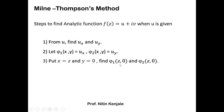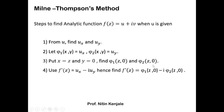After computing φ1(z, 0) and φ2(z, 0), we write the derivative of f(z) in terms of u_x and u_y. We choose f'(z) = u_x − i·u_y, then replace u_x by φ1(z, 0) and u_y by φ2(z, 0), so we get f'(z) = φ1(z, 0) − i·φ2(z, 0).